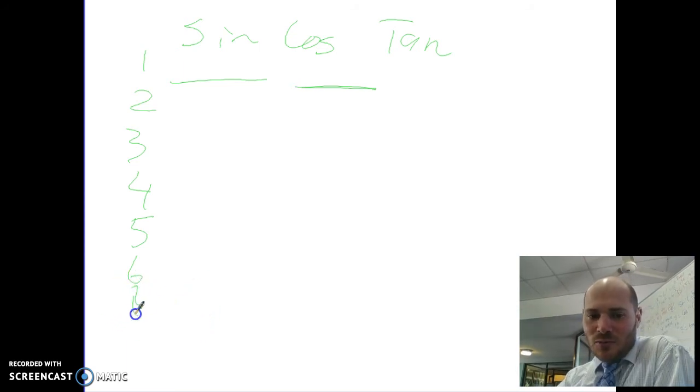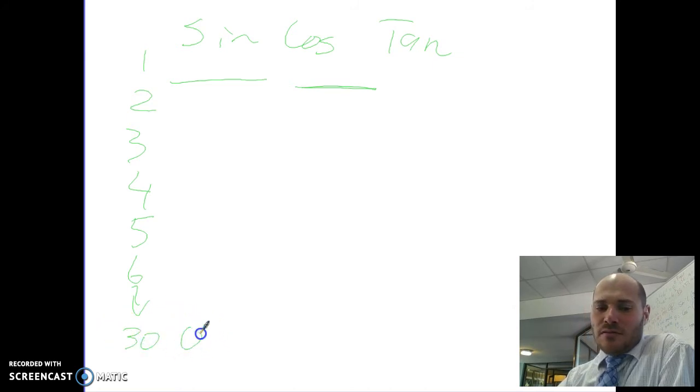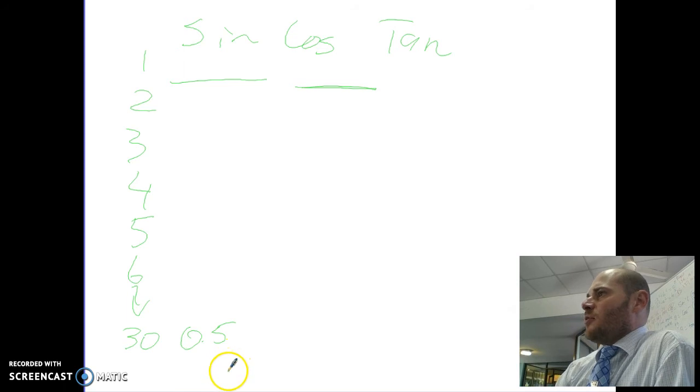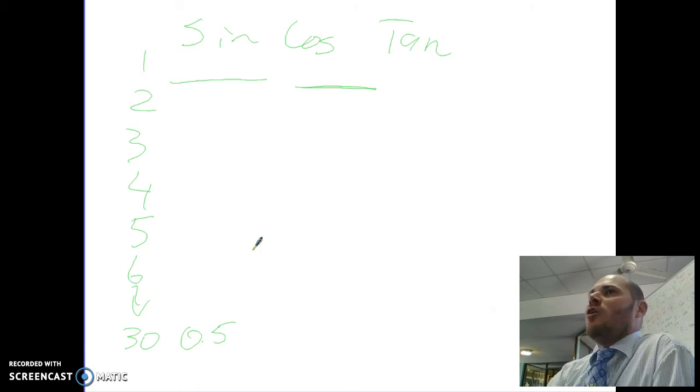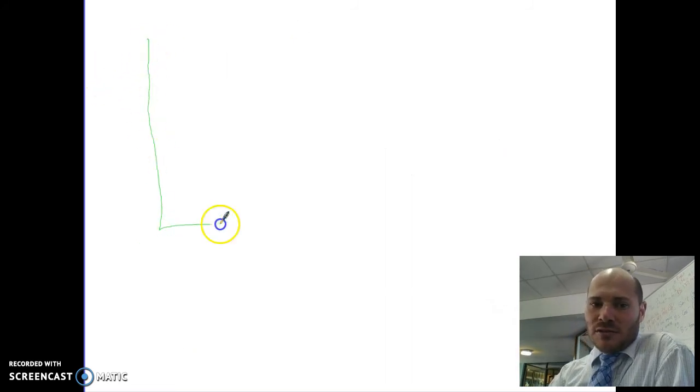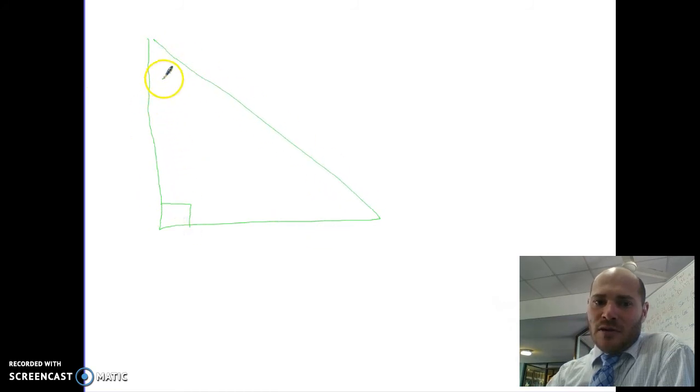For instance then, as it went down to 30, the sine became 0.5. So no matter what, no matter how big the triangle, if it was 30 degrees, it was always 0.5. So sine, cos, and tan are just ratios. And so what we then do is we're able to use those ratios to figure out the missing side. So for instance, if I have a triangle here and I know that that's 30 degrees and I know that that's 12 and I want to know what that one is.